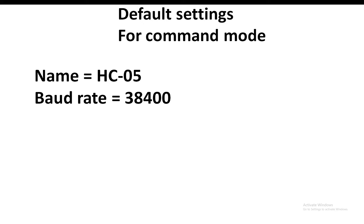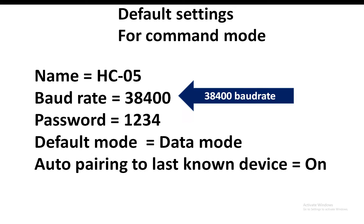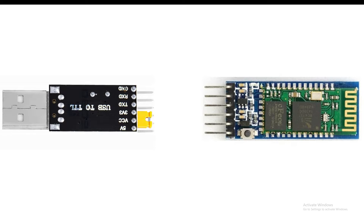In command mode, the only difference is the baud rate changes to 38400. There are two different types of HC05 in the market: one has an enable pin and another has a key pin — both do the same thing. You have to put the key or enable pin high to enter command mode. Once you're in command mode the baud rate is 38400, so you have to switch your serial monitor to that baud rate before sending AT commands.